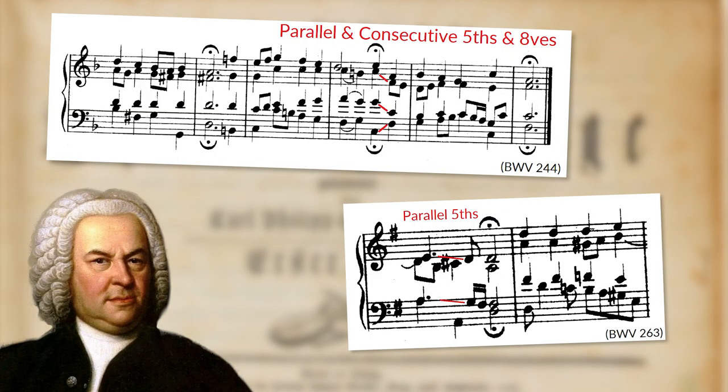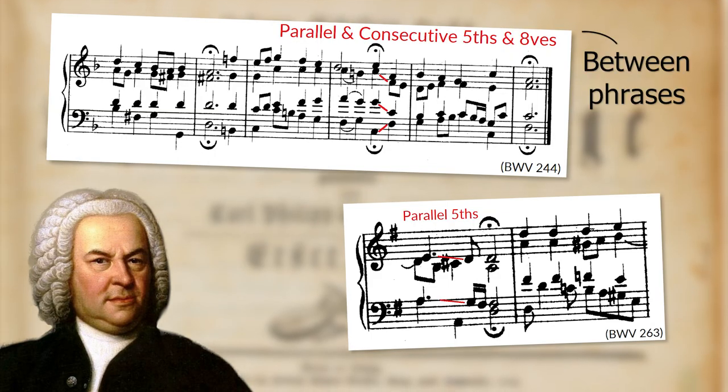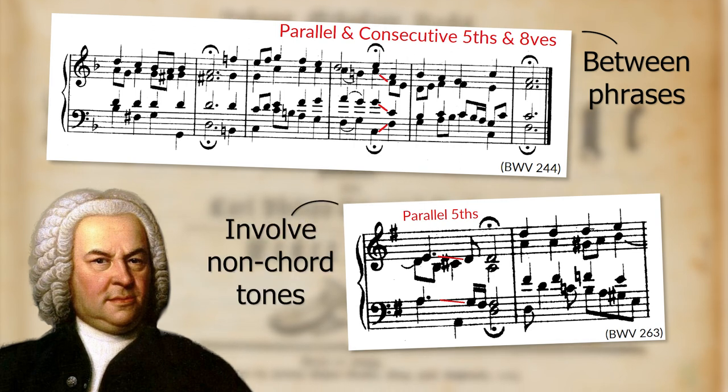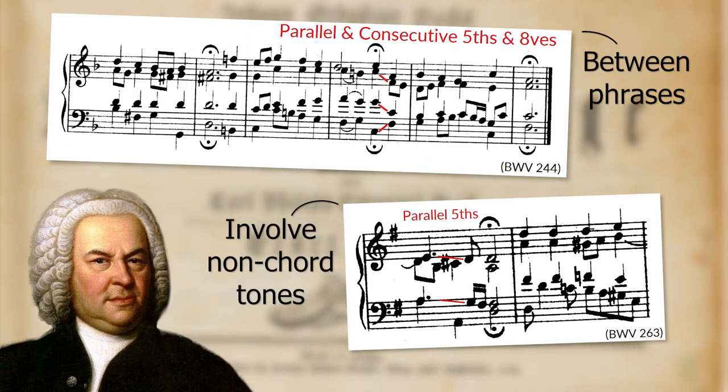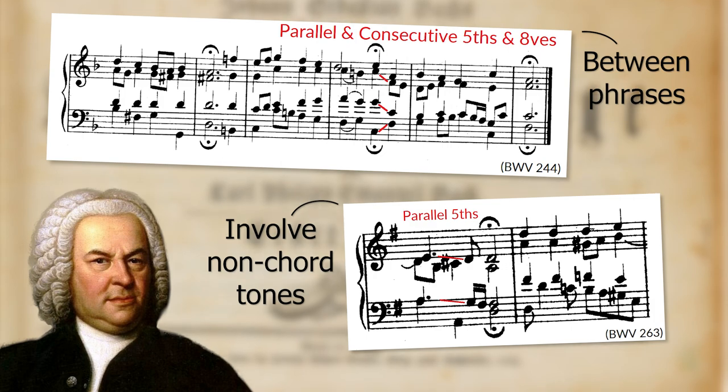To be fair to Bach, he did for the most part try to avoid these parallels, as he mainly used them when the independence between parts is arguably not as important — such as between phrases, or those that involve non-chord tones. So the context around these parallels is important, and the real question we should ask ourselves is: does having parallel fifths and octaves go against the aesthetic that the music calls for?